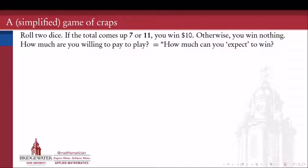In craps, in our simplified version of the game, this is very much simplified, the two amounts that you want to get on your dice are either 7 or 11. Those are sort of the magic numbers. If you roll them, then you automatically win something. So in our simplified game, we're going to roll two dice, and if the total comes up 7 or 11, then we're going to win $10.